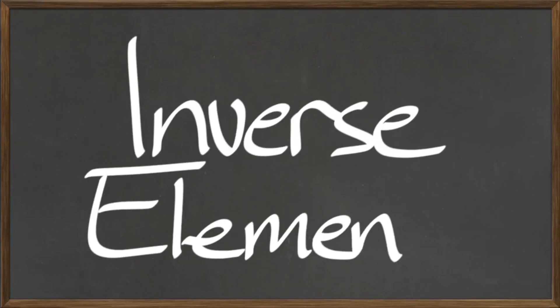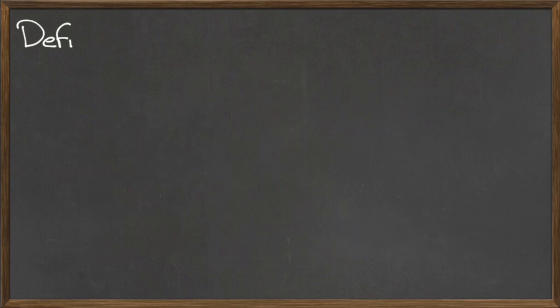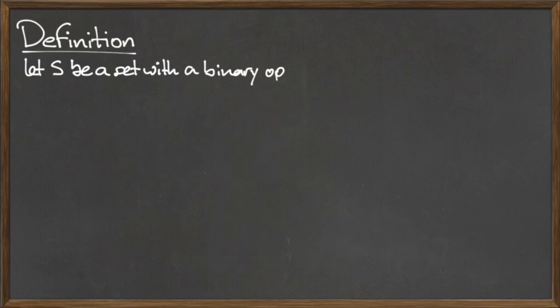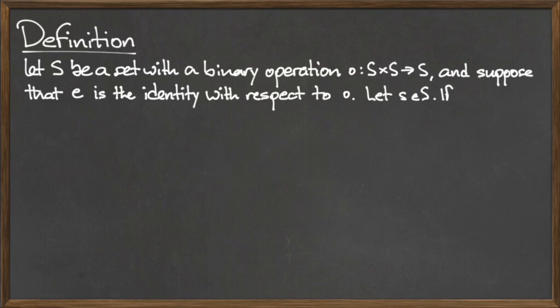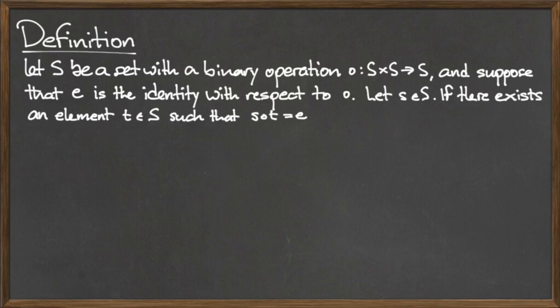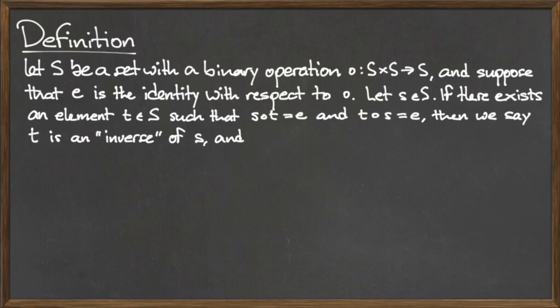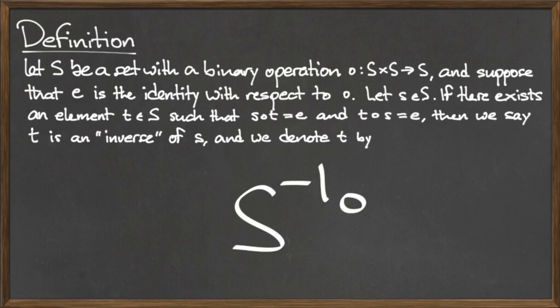In this video we will discuss inverse elements. Let capital S be a set with a binary operation dot from S cross S to S, and suppose that e is the identity element with respect to dot. Furthermore, let little s be any element of the set capital S. If there exists an element t in the set S such that s dot t equals e, and t dot s equals e, then we say that t is an inverse of s, and we denote t by the following.